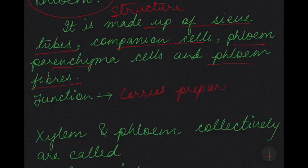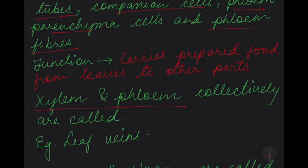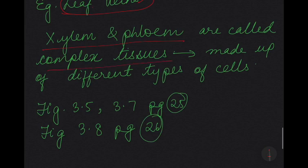The function of phloem is to carry prepared food from the leaves to other parts of the plant. Xylem and phloem together are collectively known as vascular bundles. An example of vascular bundles is leaf veins — in the leaf veins you find both xylem as well as phloem. Xylem and phloem are called complex tissues because they are made up of different types of cells.